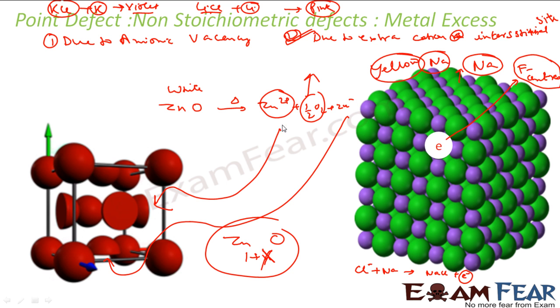And with this it gives yellow color. That is an example of metal excess defect where you have extra cations in interstitial.